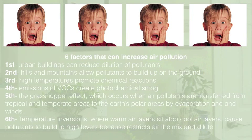There are six factors that can increase air pollution. First, urban buildings can reduce wind speed and the dilution of pollutants. Two, hills and mountains reduce the air flow in the valleys between them, which allows pollutants to build up on the ground. Three, high temperatures promote chemical reactions. Four, emissions of VOCs play a large role in the formation of photochemical smog, which is a mixture of primary and secondary pollutants formed under the influence of UV radiation from the sun. Five, the grasshopper effect, which occurs when air pollutants are transferred from tropical and temperate areas to the Earth's polar areas by evaporation and winds. Six, temperature inversions, where warm air layers sit atop cool air layers, cause pollutants to build to high levels because they restrict air mixing and dilution.